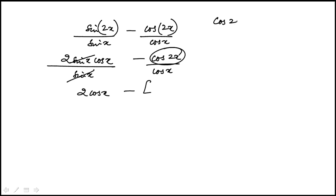Cosine 2x, this identity you need to know, is 2 times cosine squared theta minus 1. So I'm going to start with that over cosine x.